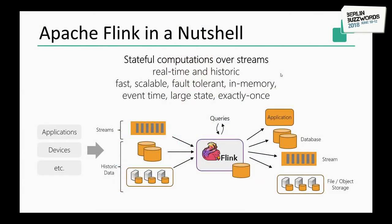What is Apache Flink? In a nutshell, Apache Flink allows you to do stateful computations over streams, either real-time or historic. It is fast, scalable, fault-tolerant, and in-memory — or on disk if you need large state. It supports event time and processing time, different notions of time that arise with your applications. It has at-least-once and exactly-once guarantees, whatever you choose for your application.